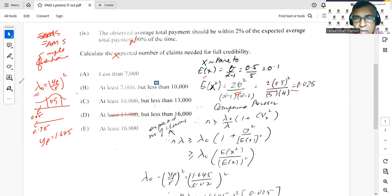I've just plugged in the numbers and obtained the second moment E[X^2] as 0.025.